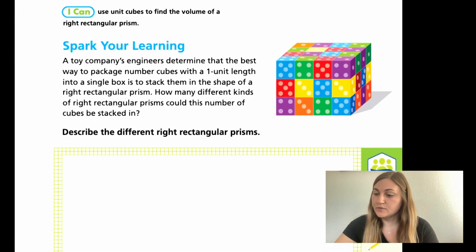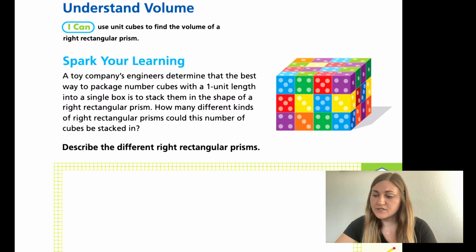Moving into Lesson 2, it starts with the word problem under spark your learning. A toy company's engineers determine that the best way to package number cubes with one unit length into a single box is to stack them in the shape of a right rectangular prism. How many different kinds of right rectangular prisms could this number of cubes be stacked in? They're using the image over to the right.